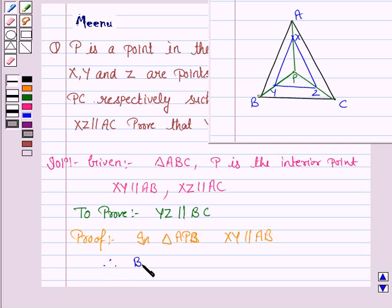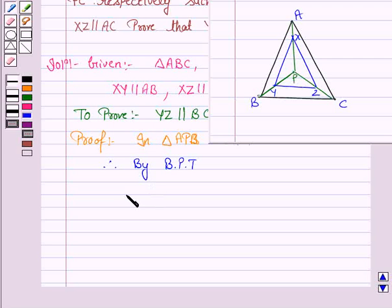Let's name this as equation one. Now, in triangle APC,